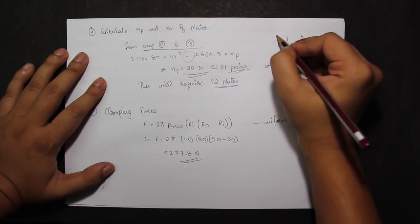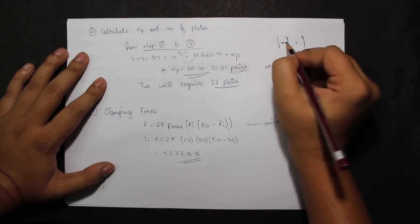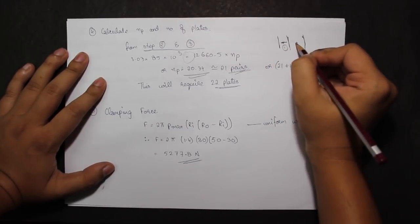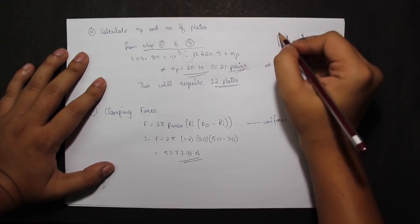Now NP is number of pairs of surface in contact. So the plates would be plus 1, because if we have number of pairs of surface of contact like this, I have two pairs of contact but three plates.